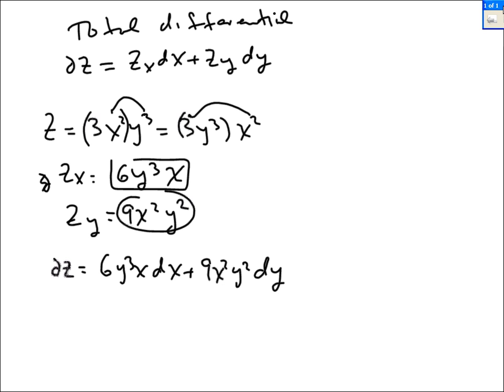I just want to see one thing here. This is a minor typo. It's not partial z. It's dz. dz equals z sub x dx plus z sub y dy. So we just found dz.